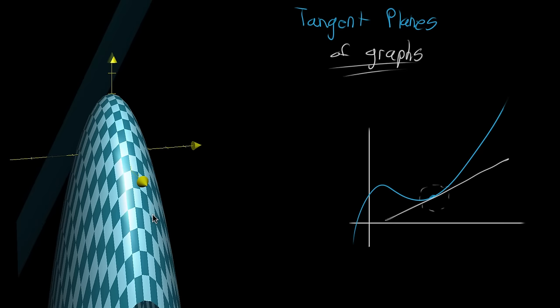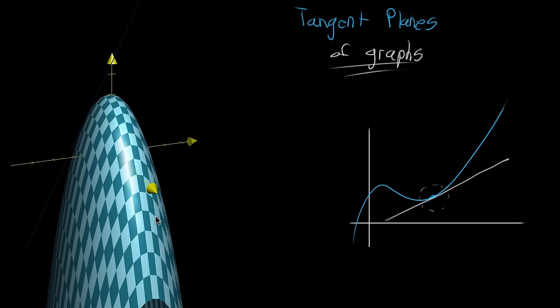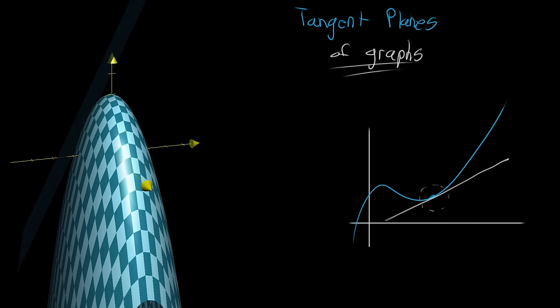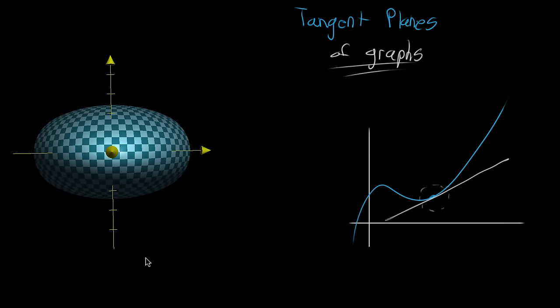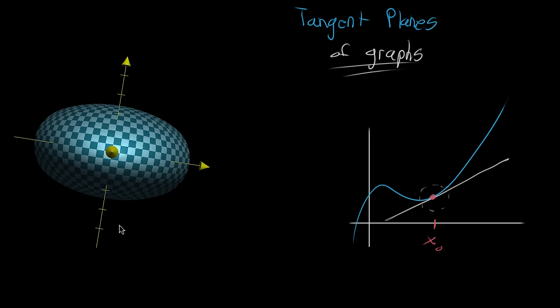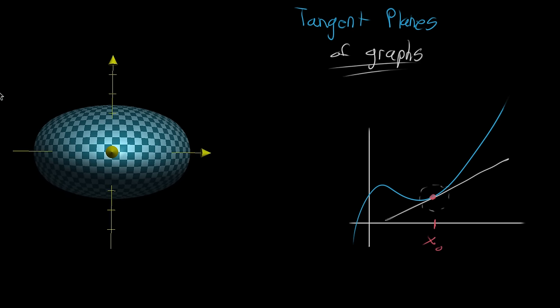Usually the way that a problem like this would be framed if you're trying to find such a tangent plane is first you think about the specified input that you want. So in the same way that over in the single variable world what you might do is say okay, what is the input value here? Maybe you'd name it like x sub 0, and then you're going to find the graph of the function that corresponds to kind of just kissing the graph at that input point. Over here in the multivariable world, you'll choose some kind of input point like this little red dot.